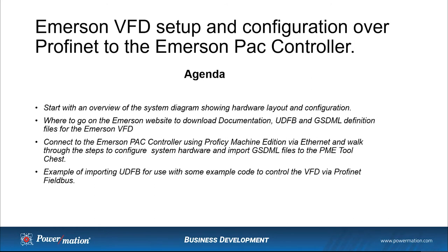We're going to start with an overall view of the system diagram showing hardware layouts and configuration. We're going to go over where to find on the Emerson website documentation, some user-defined function blocks, and of course the GSDML definition files for slave devices on Profinet. We'll connect to the Emerson PAC controller using PAC Machine Edition, then go through the steps of configuring the system hardware.